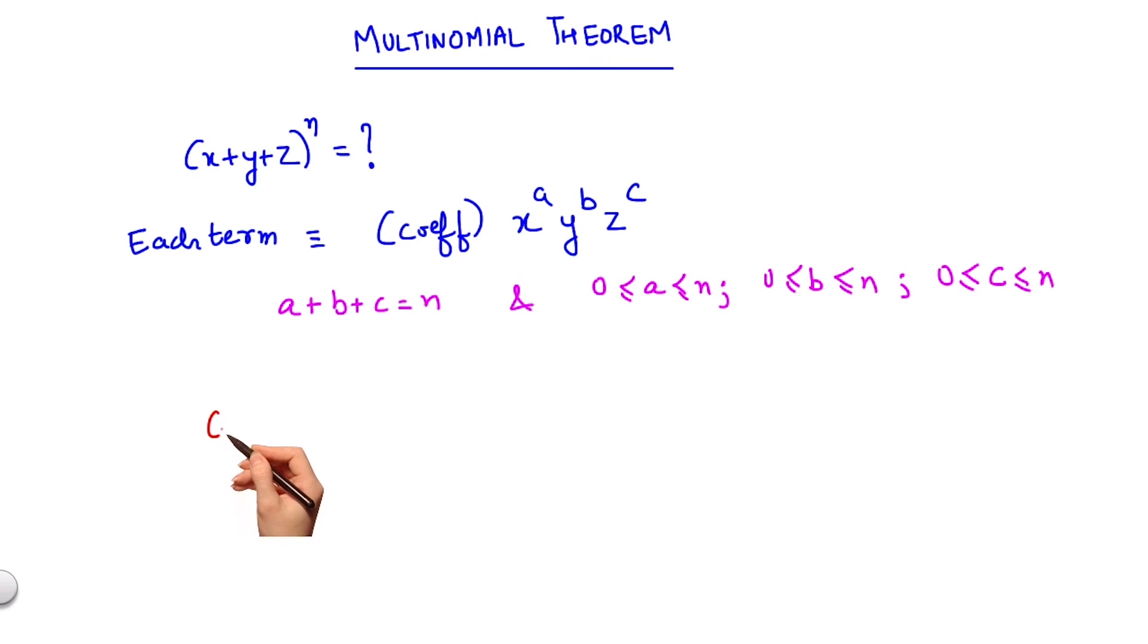In fact, the expansion of x plus y plus z whole to the power n is given as summation of n factorial divided by a factorial b factorial c factorial, multiplied by x to the power a, y to the power b, z to the power c, where a plus b plus c equals n.